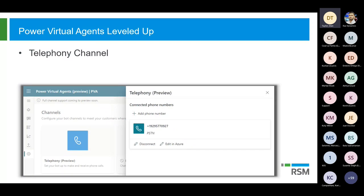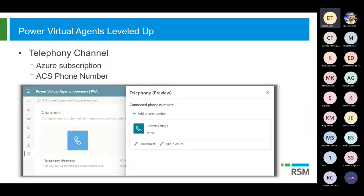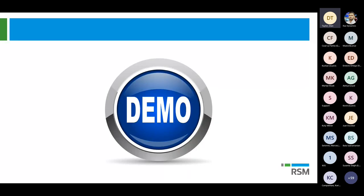This is a huge one — we're actually going to have a dedicated telephony channel, which is going to allow you to configure the bot to receive phone calls. In order to set this up, you're going to need an Azure subscription and an existing Azure Communication Services phone number as well. This looks like we don't even have to have separate bots for chat and voice channels anymore. And listen to this — you can even configure the voice and the speaking style of the bot. All bots are configured to use a default voice and speaking style by default, but you can also select other voices yourself as well.